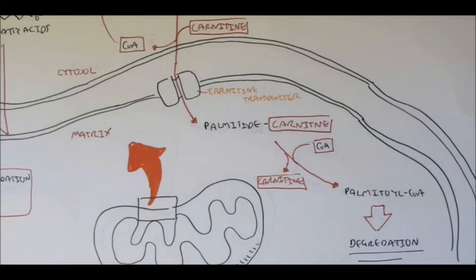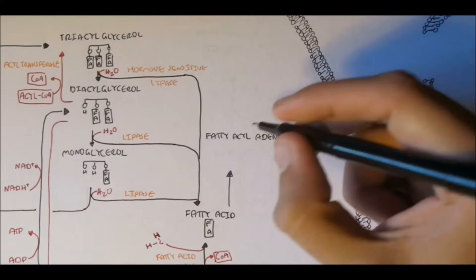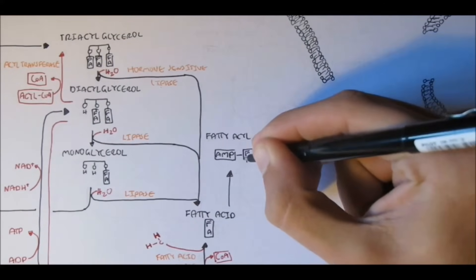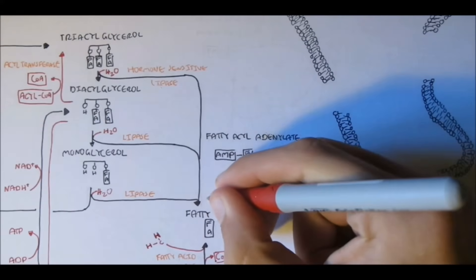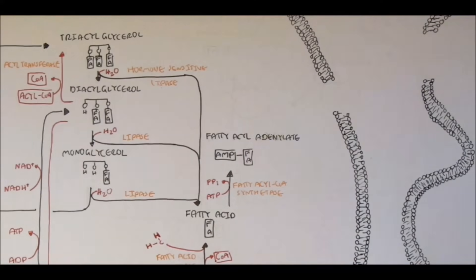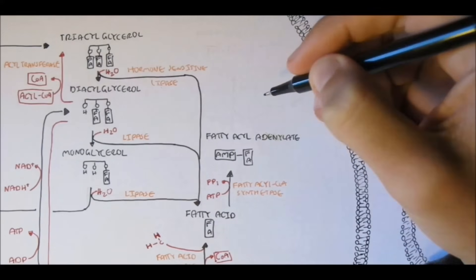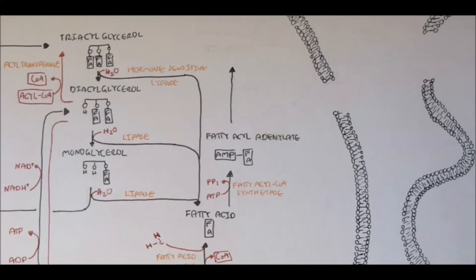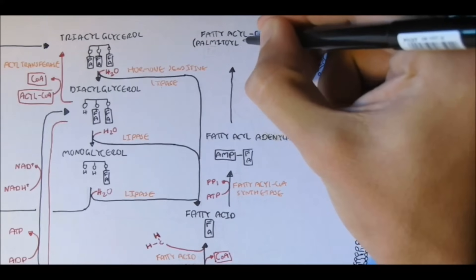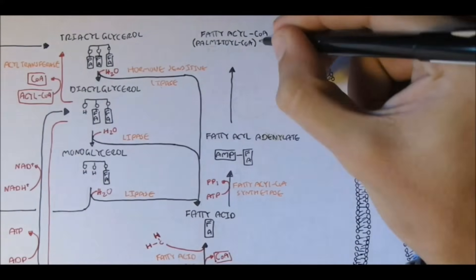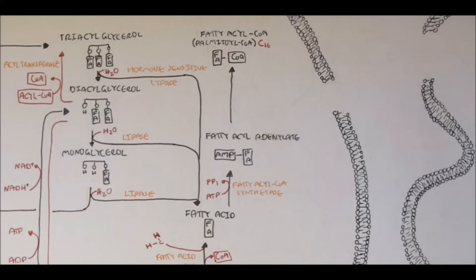Fatty acids move to the mitochondria through this carnitine transporter. For a fatty acid to be converted to fatty acyl CoA, it first must convert to fatty acyl adenylate by the enzyme fatty acyl CoA synthetase. What happens here is that an adenosine monophosphate group from ATP binds with the fatty acid, releasing the two inorganic phosphates. Then, fatty acyl adenylate removes the adenosine monophosphate and a CoA group is added by the same enzyme, fatty acyl CoA synthetase, to form fatty acyl CoA.